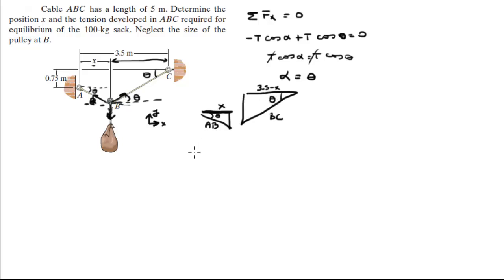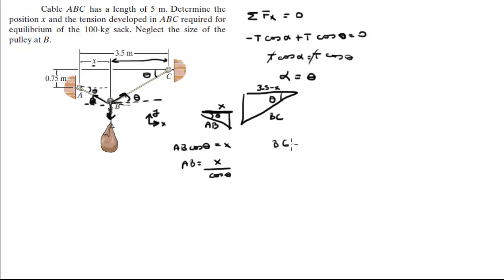From the small triangle, we know that AB times cosine of theta equals X. Therefore, AB equals X over cosine of theta. From the bigger triangle, we can see that BC times cosine of theta equals 3.5 minus X, which means BC equals (3.5 minus X) over cosine of theta.